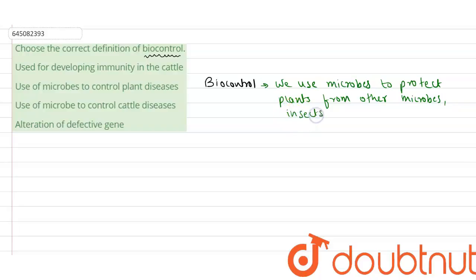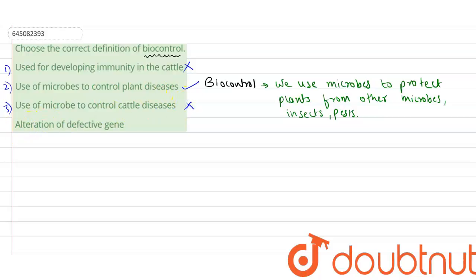The options are: first, used for developing immunity in cattle — no. Second, use of microbes to control plant disease — yes, this is absolutely correct. Third, use of microbe to control cattle disease — no. Fourth, alteration of defective gene — also incorrect. So the correct answer is option two. I hope you understood, thank you very much.